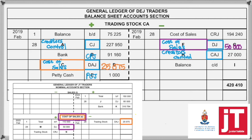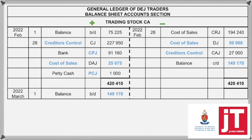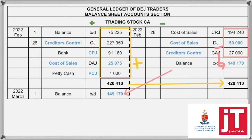So if we look at the Trading Stock account completely filled out, the missing figure was just I, and that was the balancing. So how did I get this 149,170? You had to take the debits, add them together to get the total which you carry over to both sides, then minus off your credits to get the 149,170. And then you have to bring it down to the opposite side for your balance brought down.